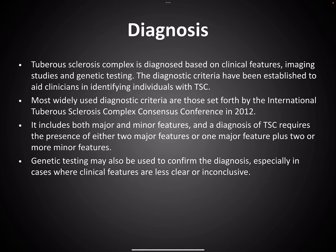Diagnosis is made based on clinical features, imaging and genetic testing. There is a criteria for diagnosing TSC set by the International Tuberous Sclerosis Complex Consensus Conference in 2012, which includes both major and minor features. The diagnosis requires two major features or one major feature plus two or more minor features. Genetic testing also aids in confirmation of diagnosis.